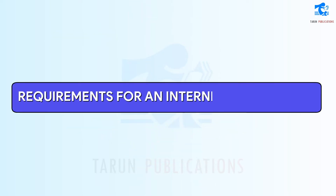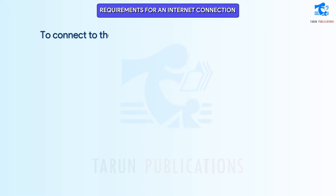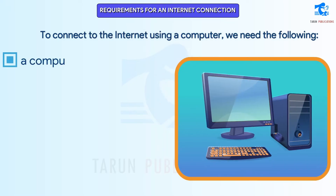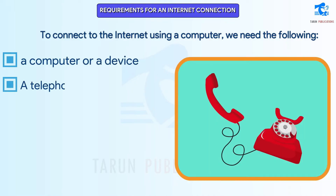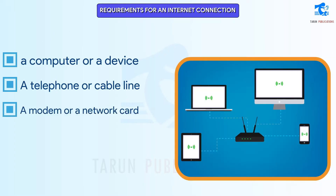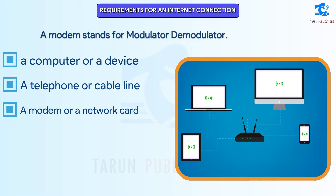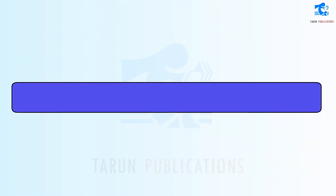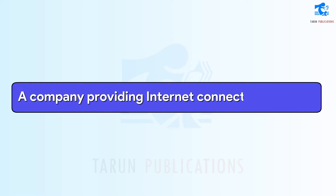Requirements for an Internet Connection. To connect to the internet using a computer, we need the following: a computer or a device; a telephone or a cable line that establishes a link between different computers; a modem or a network card. A modem stands for modulator-demodulator. A modem works by transferring digital data information over telephone lines and cables. A company providing internet connection is called an ISP.